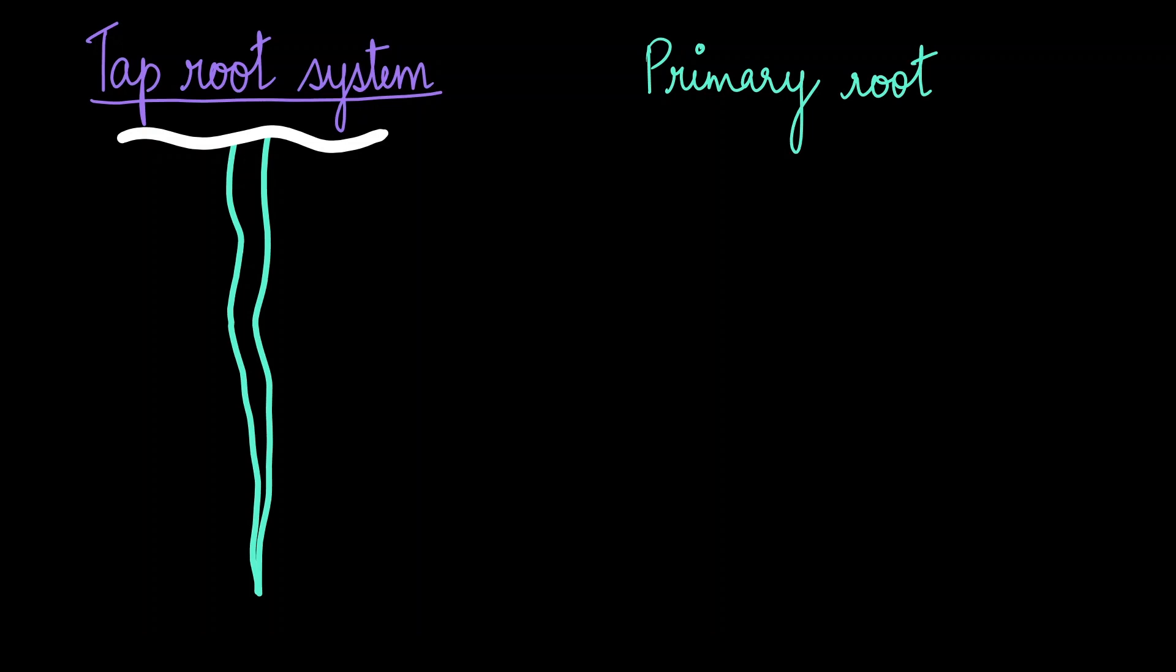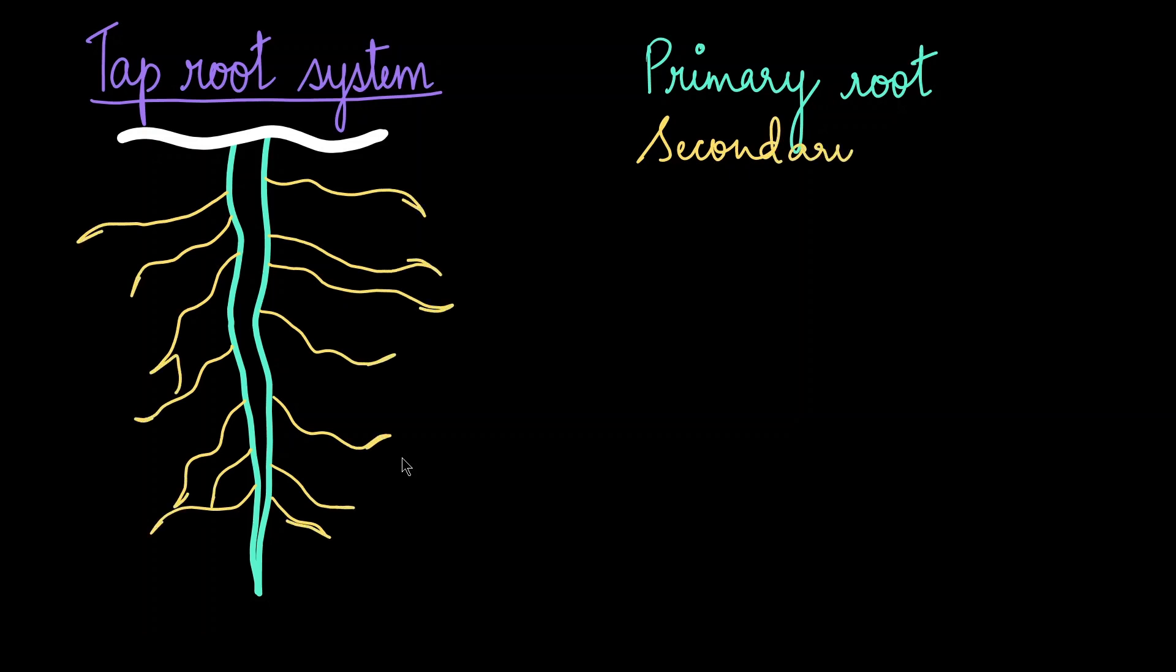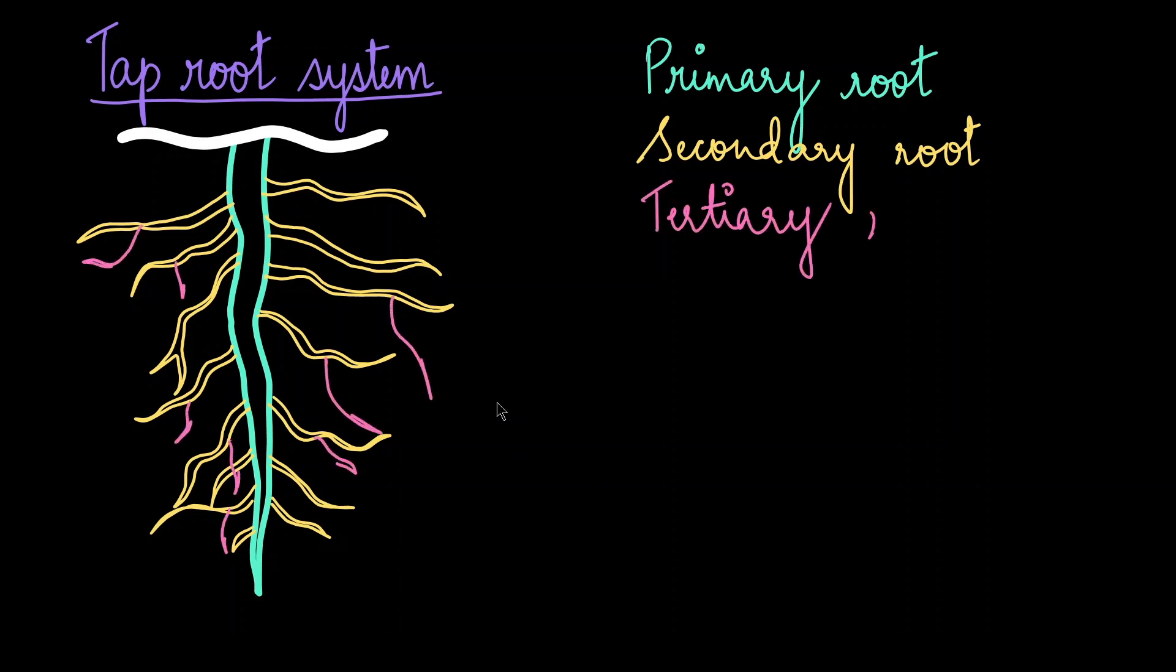Now let's take a closer look into the tap root system. In the tap root system, we have a primary root which is broader near the base and it tapers as it moves towards the tip of the root. The primary root grows vertically down into the soil. It branches laterally to give secondary roots, which grow horizontally. Secondary roots further branch to give you tertiary roots. As they branch further and further, the size keeps on reducing. Tertiary roots can further branch to give what is called as the rootlets.